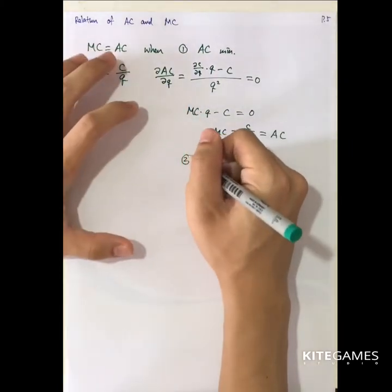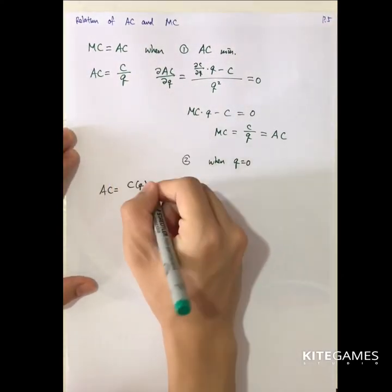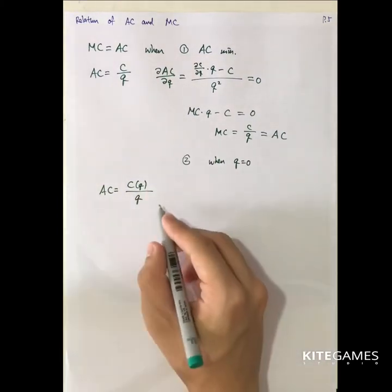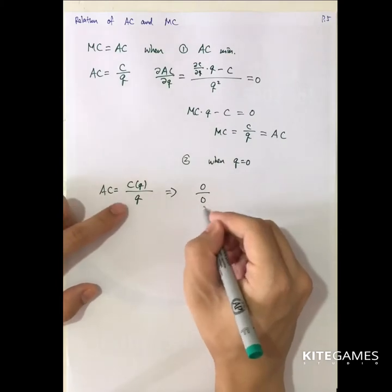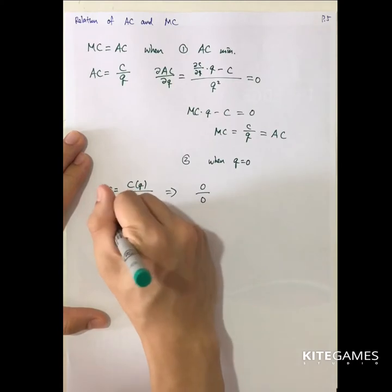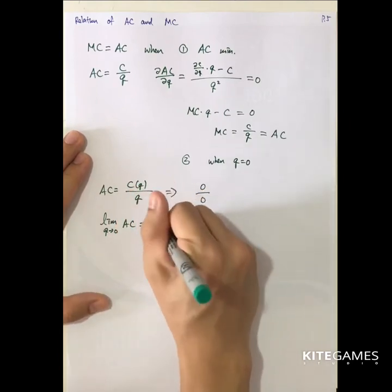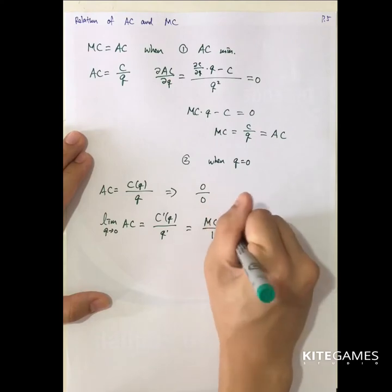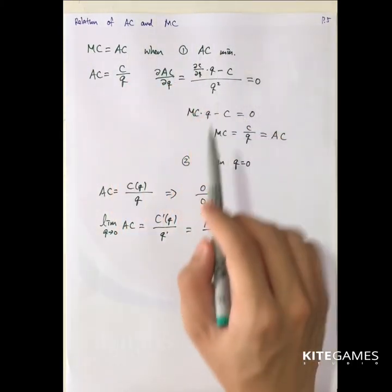Second, MC will equal AC when Q is zero. Because AC equals C as a function of Q, divided by Q. If Q is approaching zero, the numerator and denominator both go to zero, so we can apply L'Hôpital's rule. The limit as Q goes to zero of AC equals C prime of Q — then doing the first-order condition on the denominator gives marginal cost divided by one, which is just marginal cost. So this proves that MC intersects AC when AC is at the minimum and when Q equals zero.